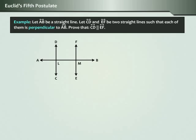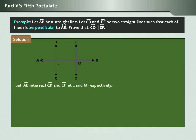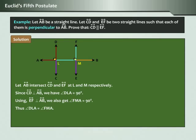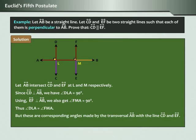Now let us take one example. Let AB be a straight line, and let CD and EF be two straight lines such that each of them is perpendicular to AB. Prove that CD is parallel to EF. Solution: Let AB intersect CD and EF at L and M respectively. Since CD is perpendicular to AB, angle DLA is equal to 90 degrees. Since EF is perpendicular to AB, angle FMA is equal to 90 degrees. Thus angle DLA equals angle FMA, and these are corresponding angles made by the transversal AB with lines CD and EF. Hence by the corollary to Theorem 2, we conclude that CD is parallel to EF.